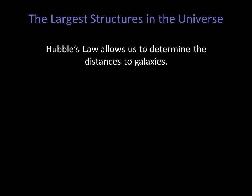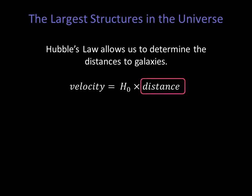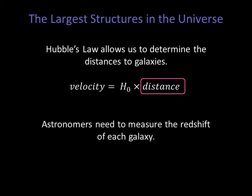Beyond about 300 million light years from Earth, Hubble's law becomes our primary method for measuring distances to galaxies. With Hubble's law, astronomers can make maps of the distribution of galaxies in space. This endeavor requires a vast amount of data — in particular, astronomers need to measure the redshifts of each individual galaxy so that the distance can be estimated using Hubble's law.